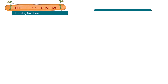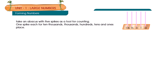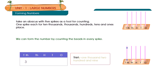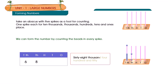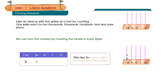Forming numbers. Take an abacus with 5 spikes as a tool for counting — one spike each for the 10,000s, thousands, hundreds, tens, and ones place. We can form the number by counting the beads in every spike: 31,209; 68,450; 62,174; 52,830; 37.